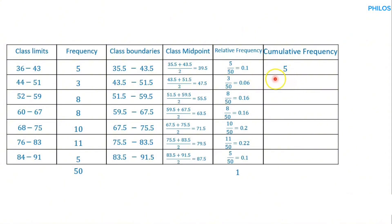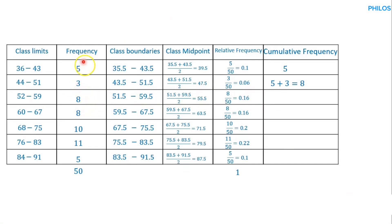For the second class, you add the frequency of the second class to the previous: 5 plus 3 gives a cumulative frequency of 8. For the third class, you add its frequency to the previous classes: 8 plus 3 plus 5 gives 16. For the fourth class: 8 plus 8 plus 3 plus 5 gives 24.